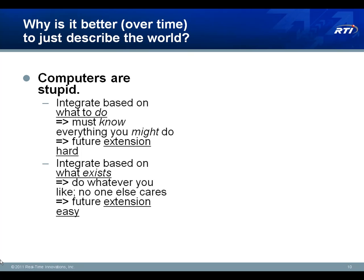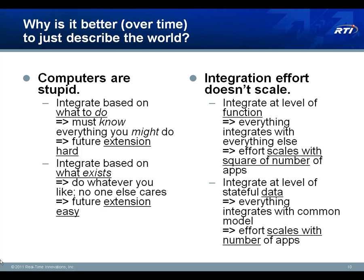In contrast, if you integrate applications with a common picture of the state they care about — independent of the particular functions that will be carried out as a result of changes to that state — you eliminate that coupling and it becomes much easier to add and remove functionality over time. Furthermore, if every application has to integrate directly with other applications based on their function, the effort scales with the square of the number of applications. But if you integrate applications with a common state picture, each application only needs to be integrated one time with that common state picture.